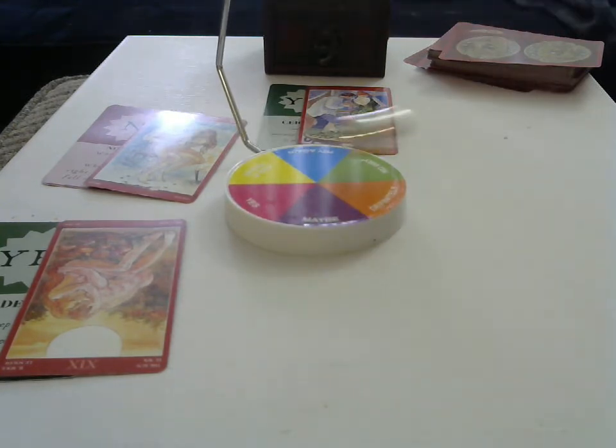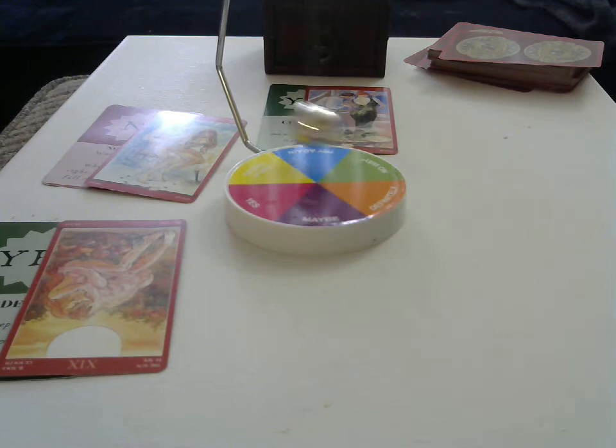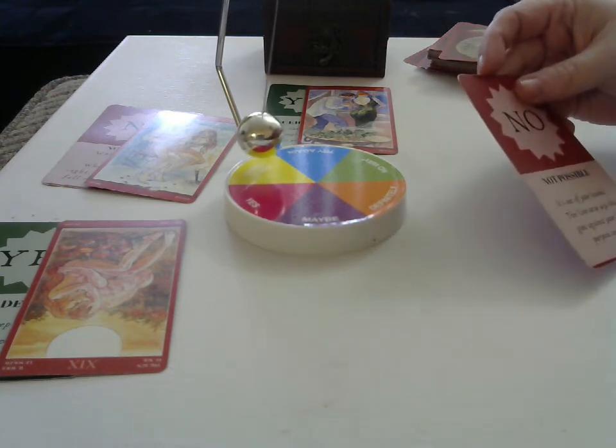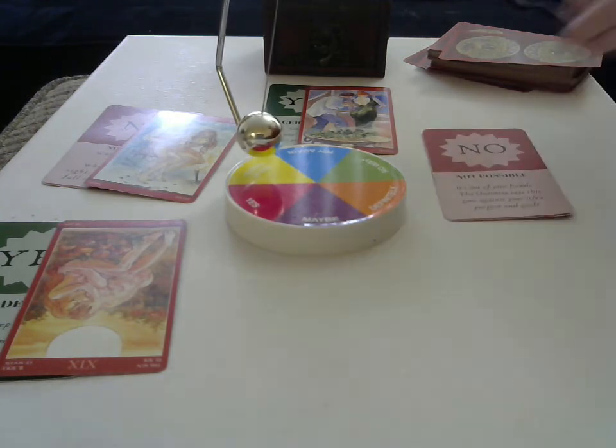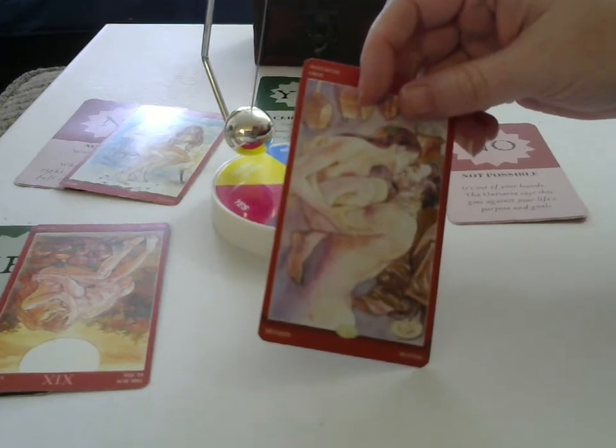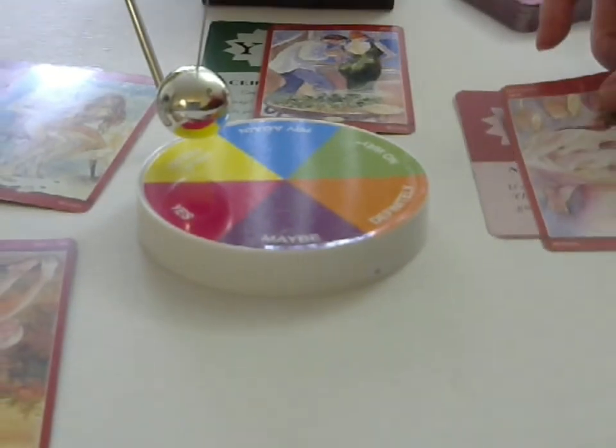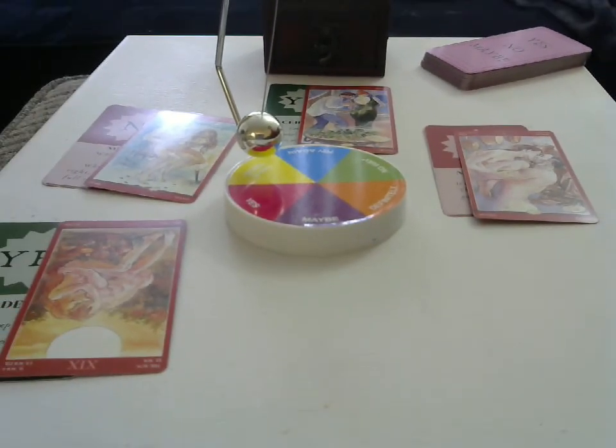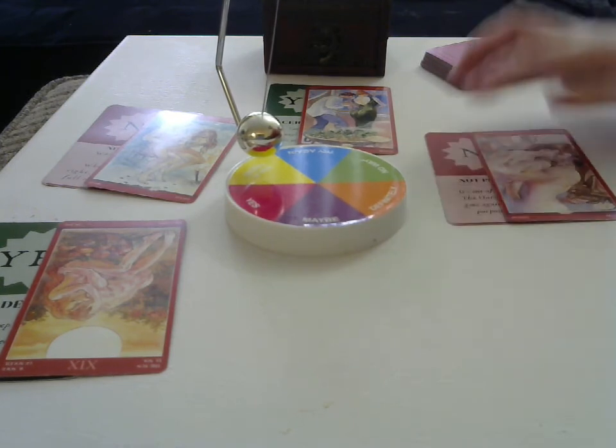Question number four. What is the answer to question number four? What is the watcher's answer to question number four? We'll just pull right out. Okay, it says ask a friend and it says no, not possible. It is out of your hands. The universe says this goes against your life's goals and purposes. So then let's pull a tarot card and give you a little bit more information and it's showing up as the three of pentacles. So the three of pentacles is about craftsmanship and working together. So you have to use your intuition to see how this reads for you. Is this person not working with you? Are you not working with them? You're going to want to get that intuition as to what the reason is, but the answer is showing as no.